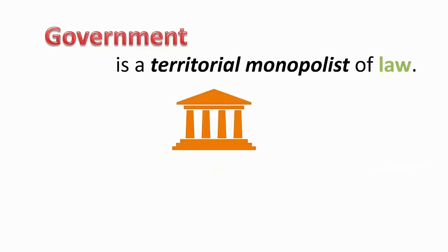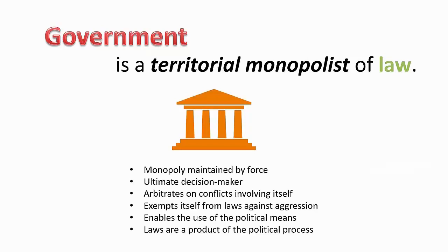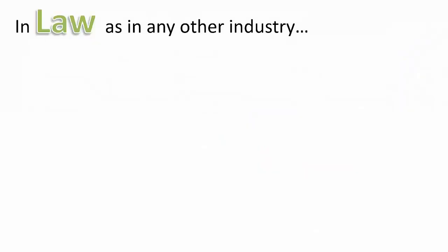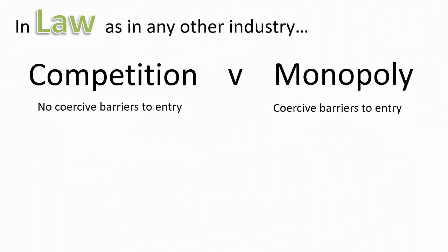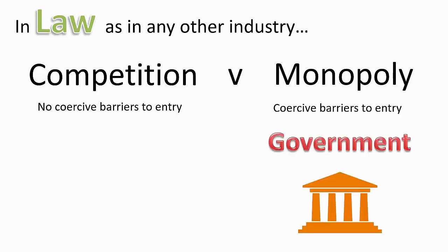Now let's define government, which I'm using interchangeably with the word state. Government is a territorial monopolist over law — the sole provider of law, the ultimate decision maker and arbitrator within a territory. Monopolies can only be maintained using force, and this is how a government operates: it uses its monopoly of law to exempt itself from rules about the use of force. For example, they declare that stealing is legal when they do it and they call it taxation. So in the field of law, just like every other industry, you can have competition or you can have monopoly. When you have monopoly, that's government. When you have competition, that's anarchy.